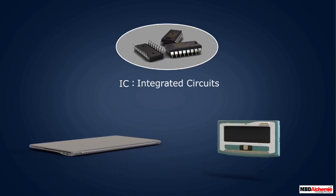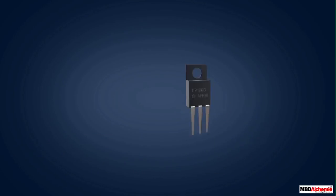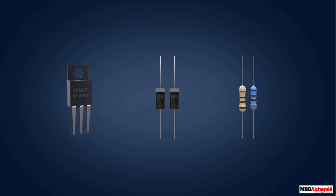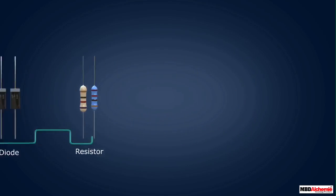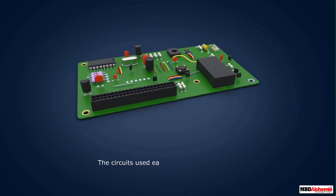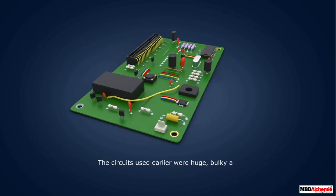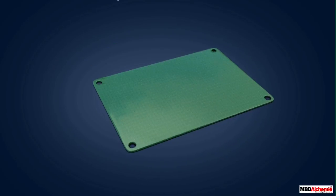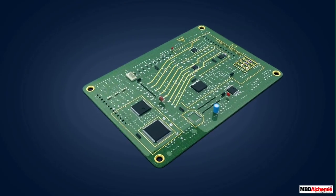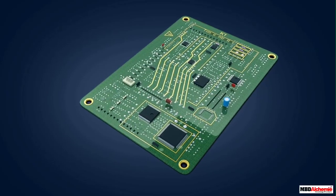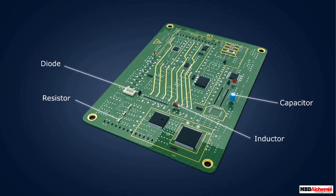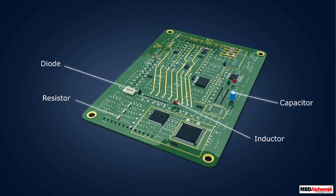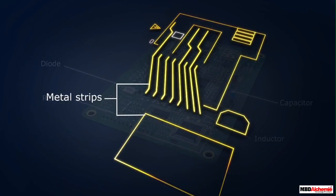Integrated circuits have a big role to play in the miniaturization of electronic gadgets. Earlier, electronic circuits were prepared using transistors, diodes, and resistors joined using conducting wires. Because of this, these circuits were huge and bulky, and further these circuits were not reliable. So an attempt was made to fabricate an entire circuit consisting of many components such as diodes, resistors, inductors, and capacitors.